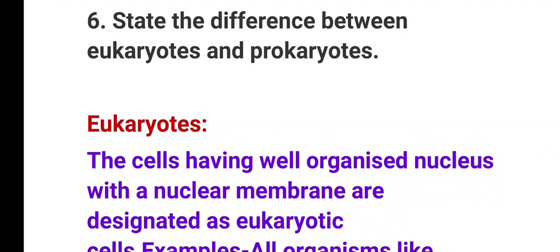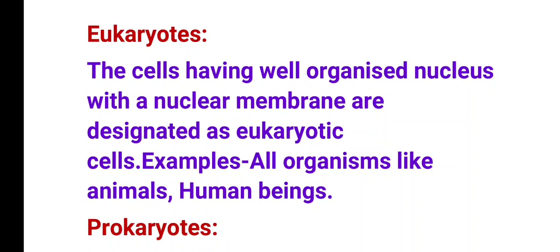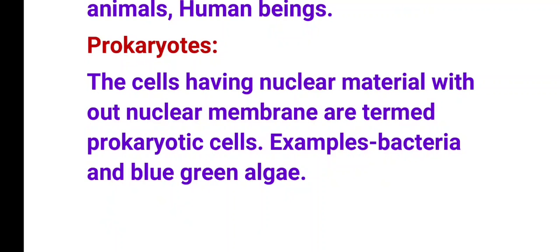Question number 6: State the difference between eukaryotic and prokaryotic cells. Eukaryotic cells have a well-organized nucleus with a nuclear membrane. Prokaryotic cells have nuclear material without a nuclear membrane — examples include bacteria and blue-green algae.